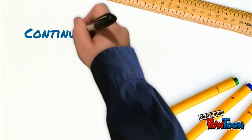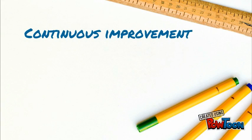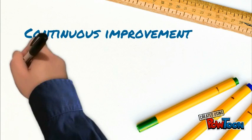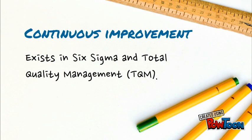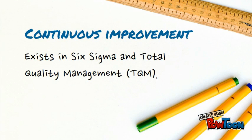The last key quality management concept is continuous improvement. It exists in all of the major quality management approaches, such as Six Sigma and Total Quality Management. Continuous improvement is simply the ongoing effort to improve your products, services, or processes over time. These improvements can be small, incremental changes or major, breakthrough type changes.